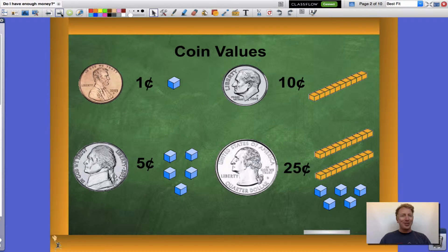Let's talk coin values yet again. One penny is worth one cent, one nickel is worth five cents, one dime is worth ten cents, and a quarter is worth 25 cents.